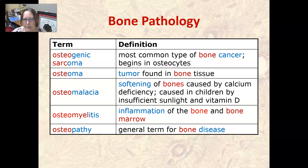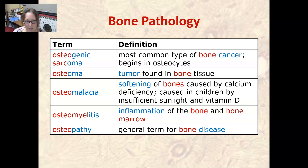Osteogenic sarcoma is the most common type of bone cancer, and it begins in the osteocytes. An osteoma is a tumor found in bone tissues. Osteomalacia is the abnormal softening of bones. It is caused by calcium deficiency, which is caused in children by insufficient sunlight and vitamin D, which you get from sunlight.